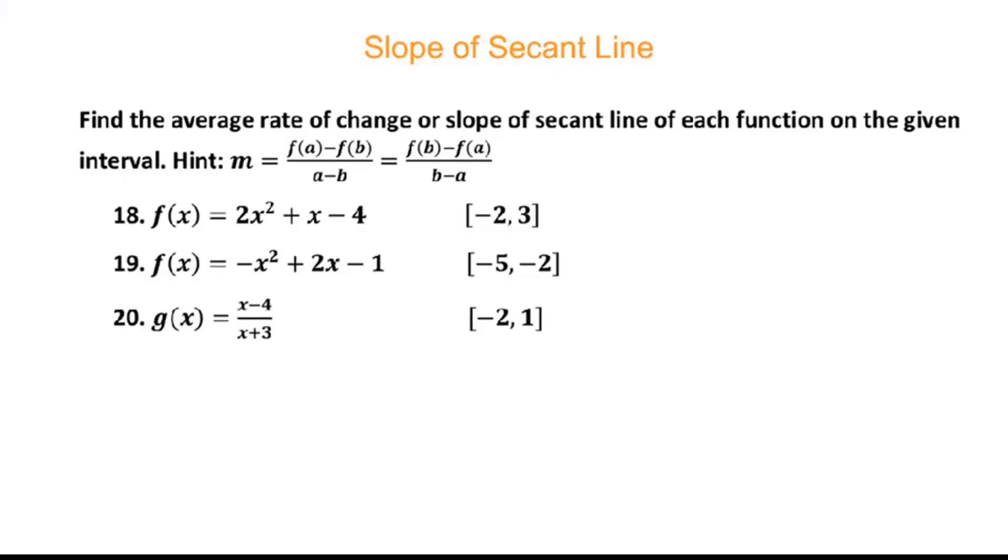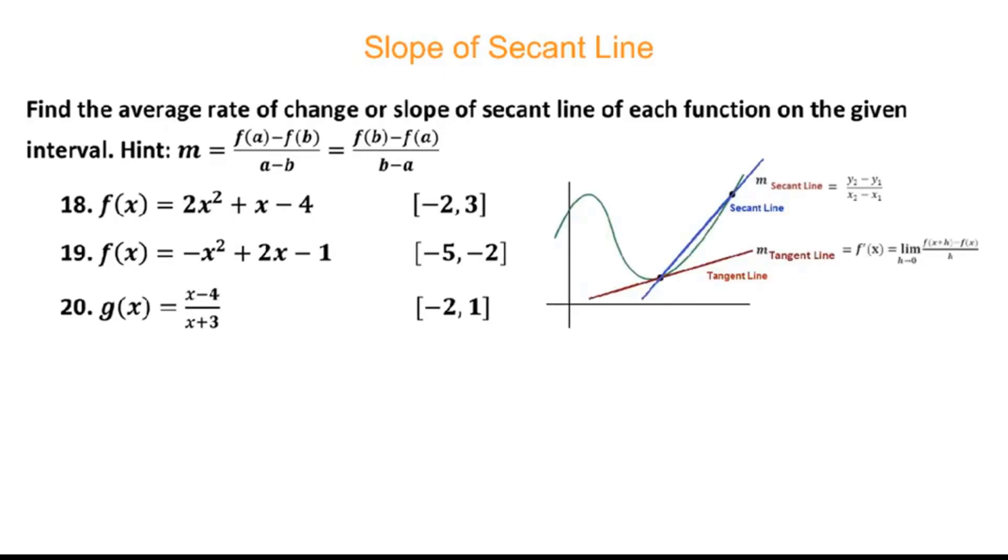This video is about slope of a secant line. What's the definition of a secant line? When a linear function passes through a curve with two points, we call this linear function a secant line. Then the formula is this one.